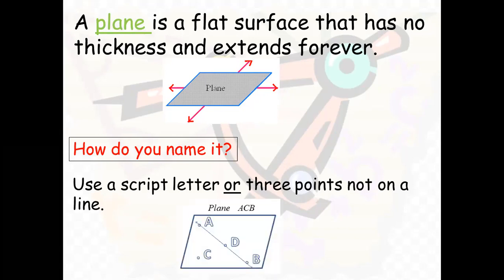We name the plane by using a script letter — script letters are the stylish letters of the English alphabet — or by using three points not on a line. For example, you can call this plane as plane ACB. It should not be three points that are on a line — for instance, you cannot call it plane ADB because A, D, B are on a line. You can call it BCA, BDC, or any combination of points not on the same straight line. Or you can simply use a script letter like plane R.